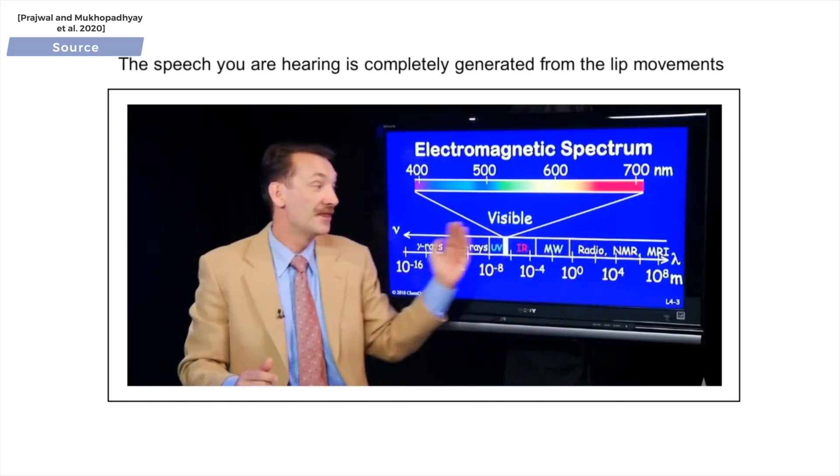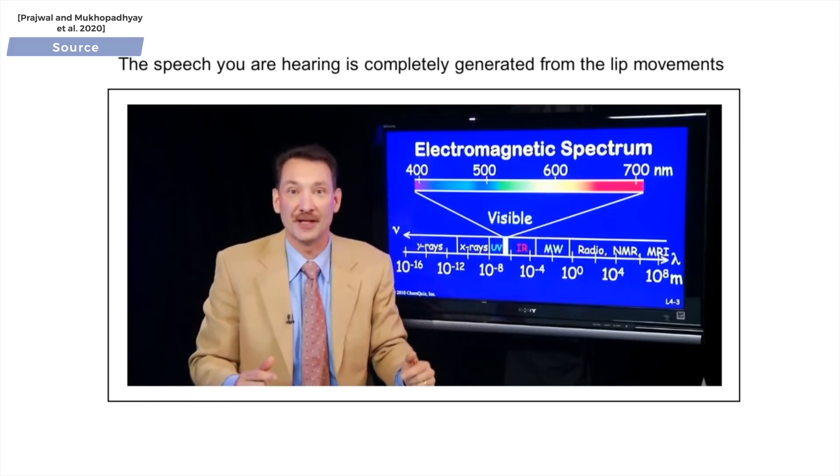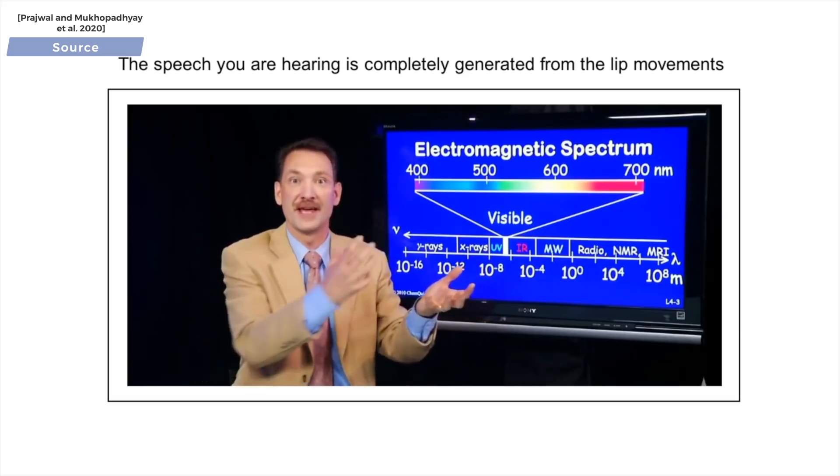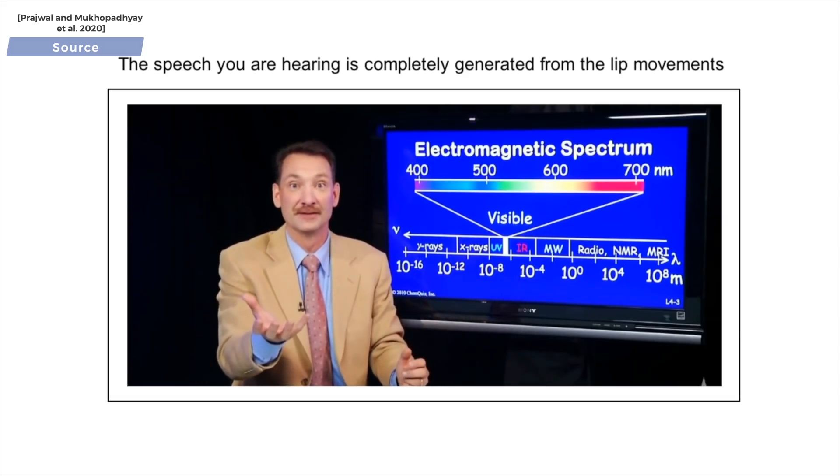Between the wavelength, the frequency, and the speed of electromagnetic radiation. In fact, the product of the wavelength and the frequency is its speed. Wow.